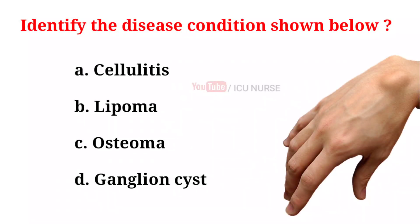Identify the disease condition shown below. A. Cellulitis. B. Lipoma. C. Osteoma. D. Ganglion cyst. And the correct answer is...